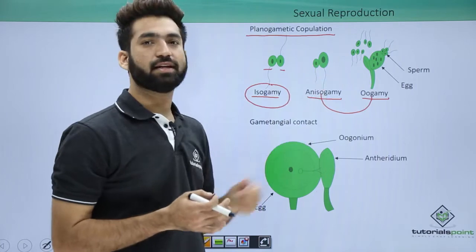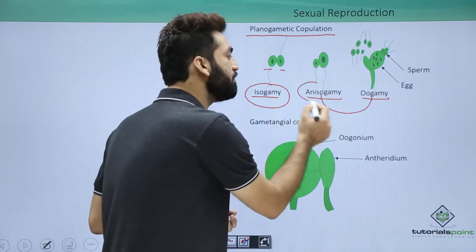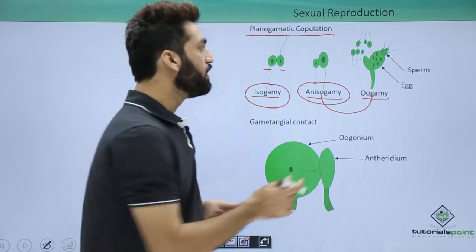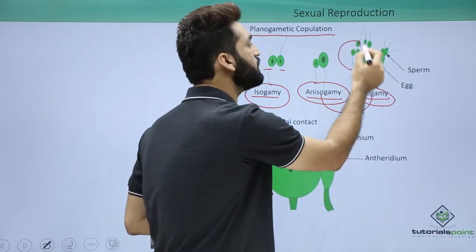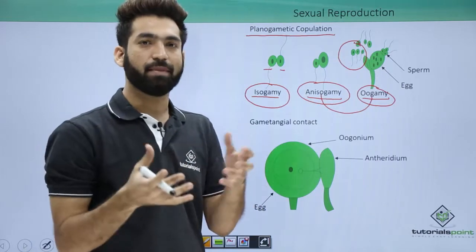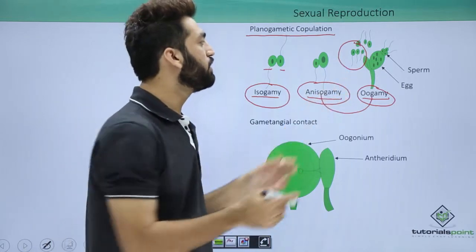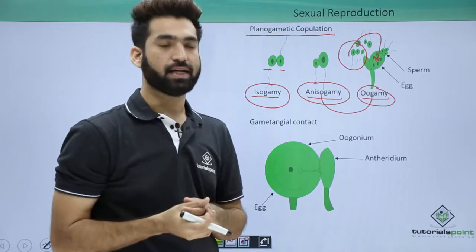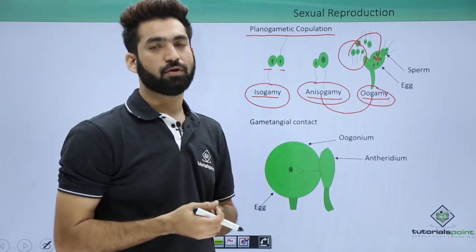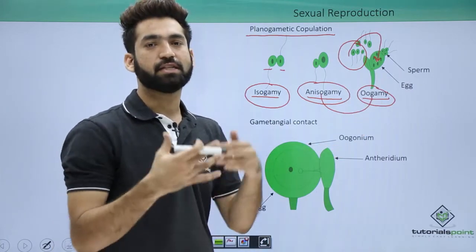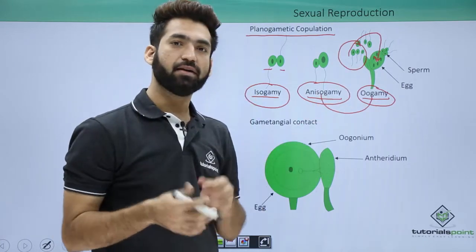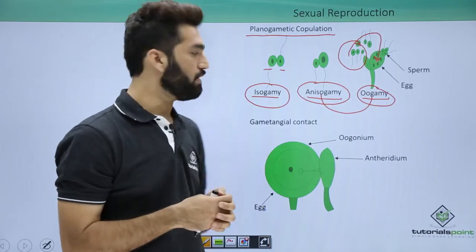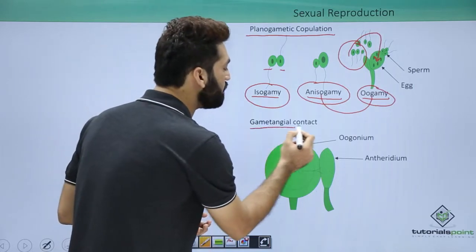In anisogamy, one gamete is smaller and another is bigger — two different types of gametes are produced. In oogamy, the male gamete remains motile with a flagella while the female gamete doesn't move; the male gamete fuses with the egg. Oogamy is also followed in higher plants, where the zygote is formed inside the female body.